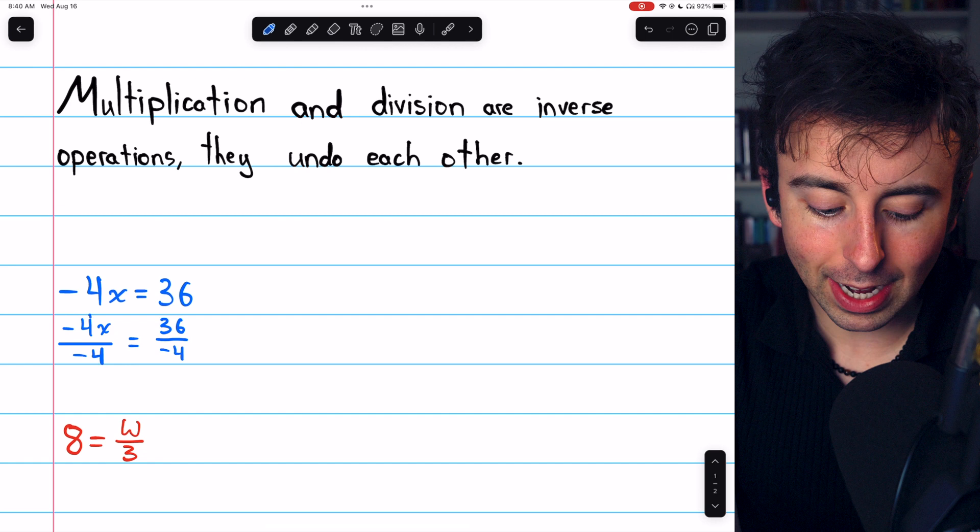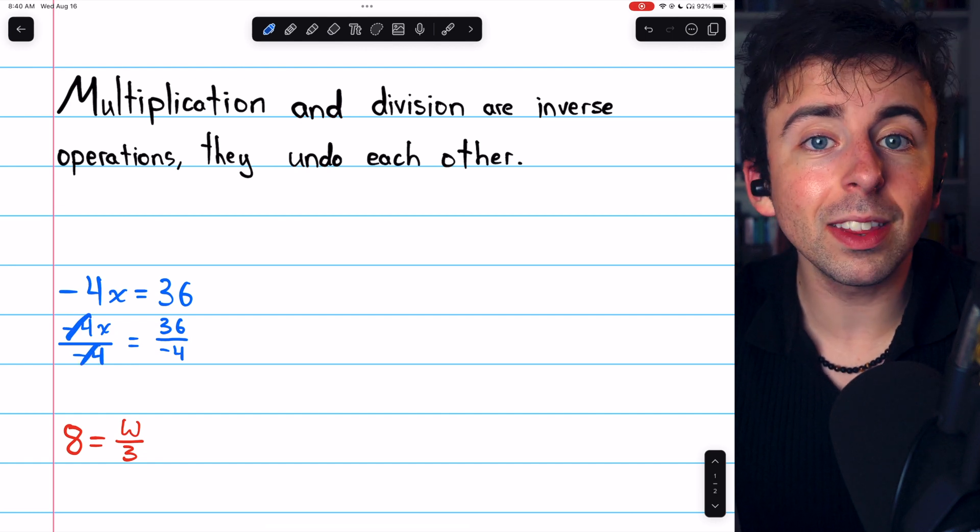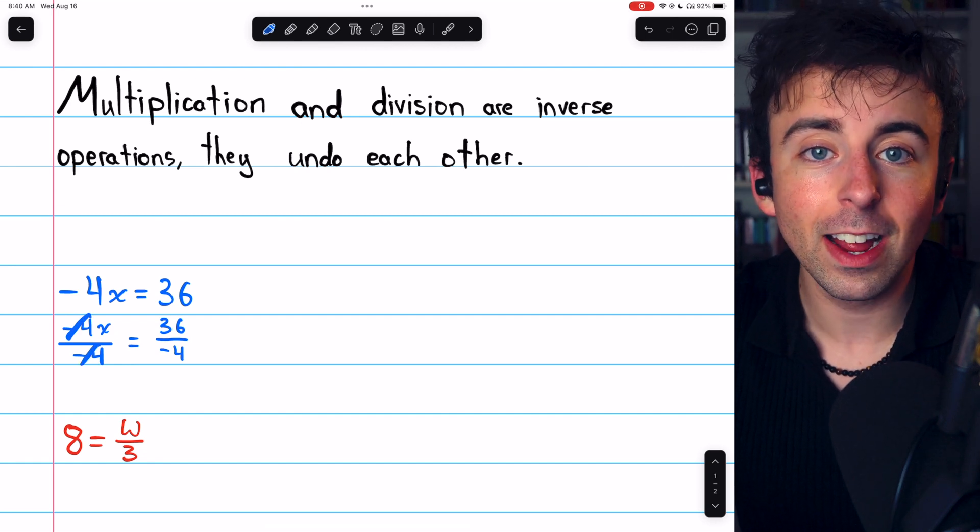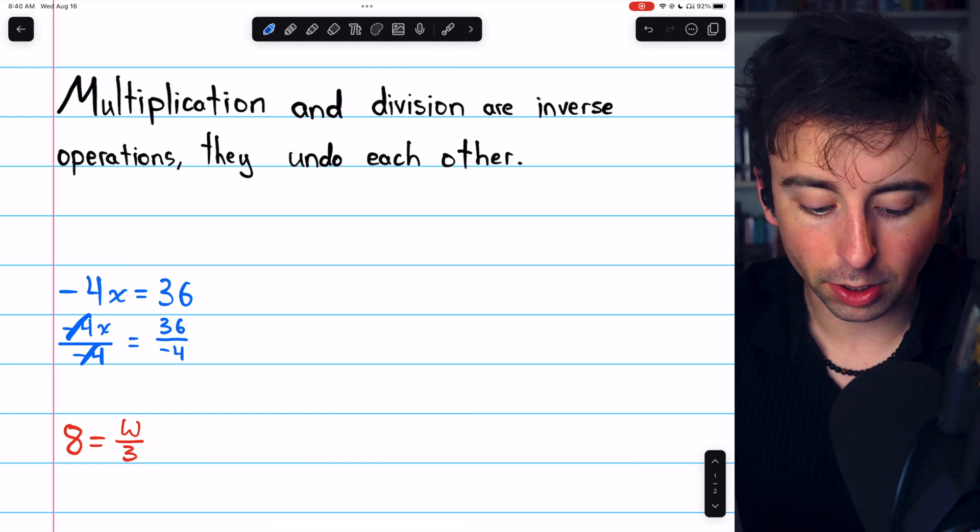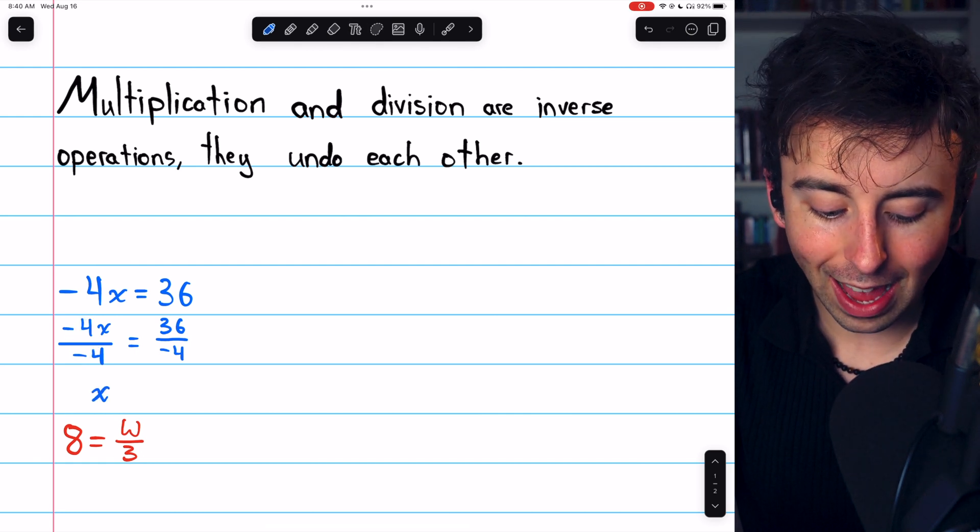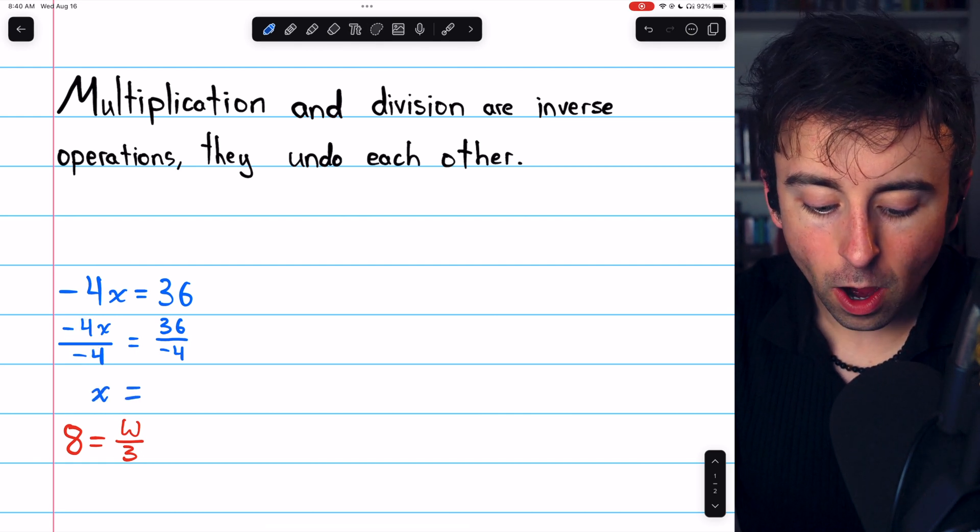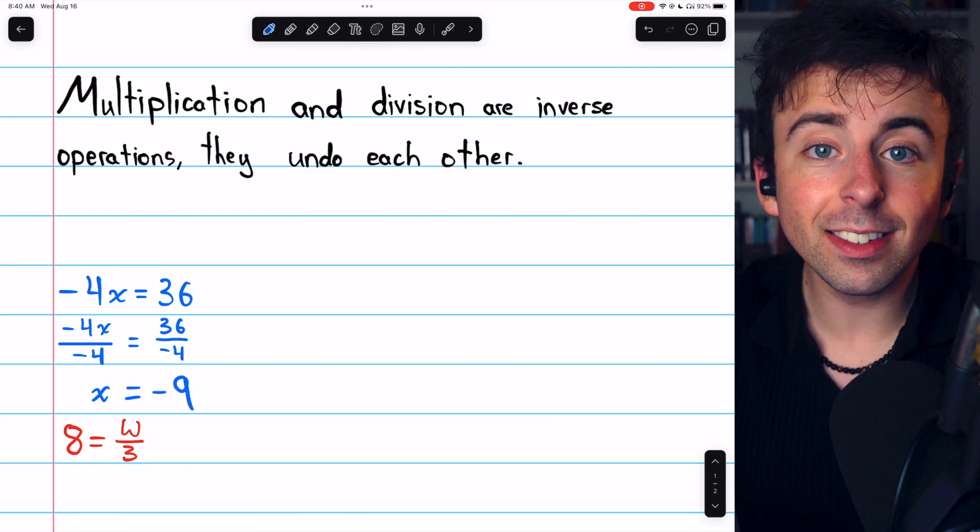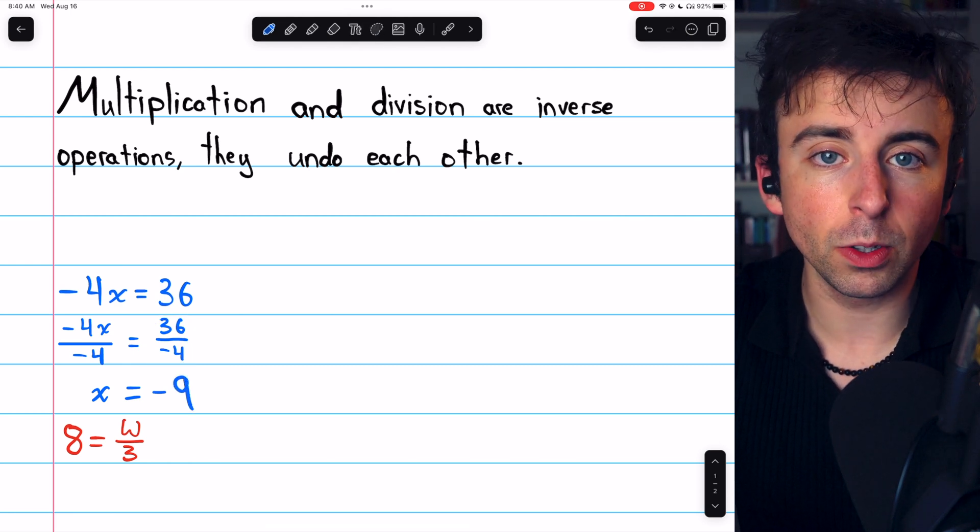On the left, dividing by negative 4 cancels out with the negative 4 that was already there. The division undoes the multiplication, and that just leaves x on the left side. On the right, 36 divided by negative 4 is negative 9, and that's our solution.